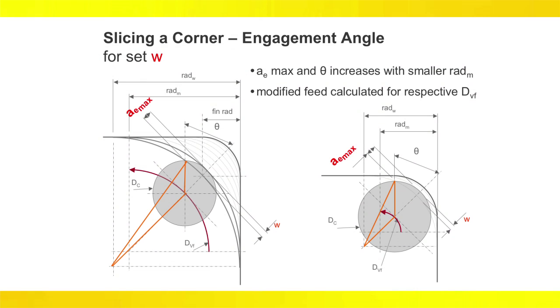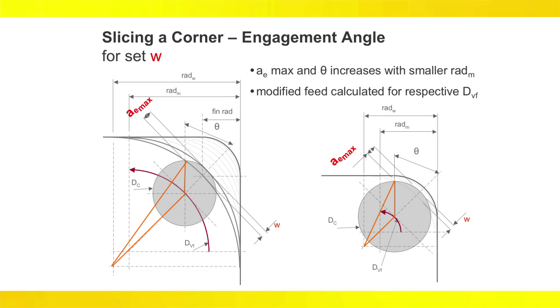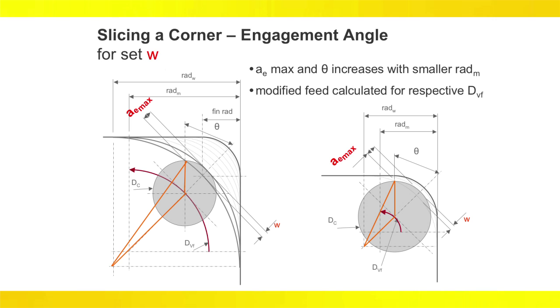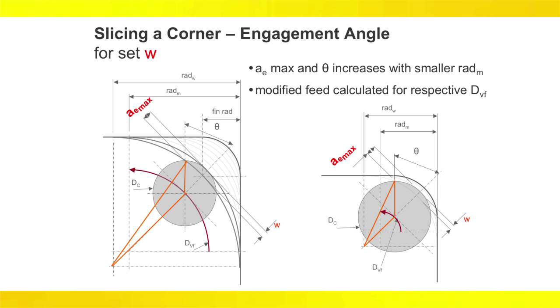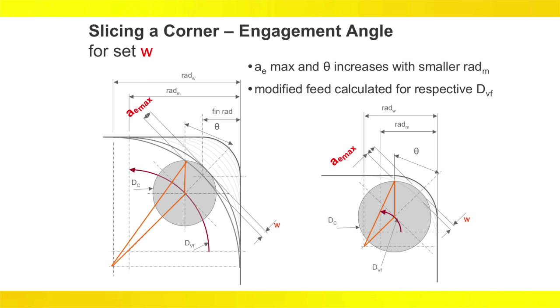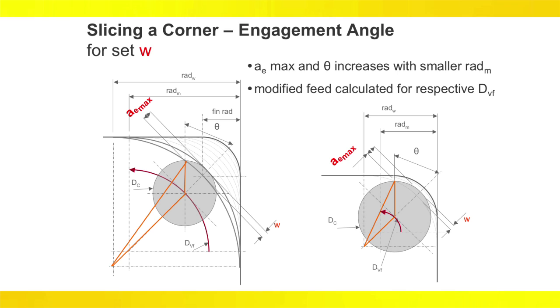Notice in this illustration as each slice produces a smaller corner radius. If the radial step over W is consistent, it will cause the radial engagement AEmax to increase. As the corner gets tighter, this will add unwanted cutting forces on the tool and reduce cutting performance.